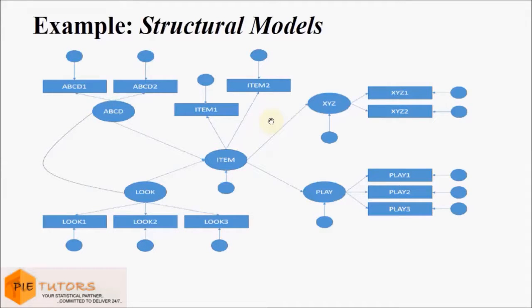Each of these variables have a different number of indicators. For example, the latent variable 'look' has got three indicator variables. Similarly, the latent variable 'play' has got three indicators. The latent variable 'item' has got two indicators.